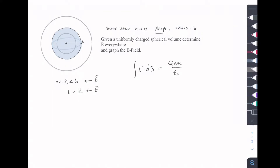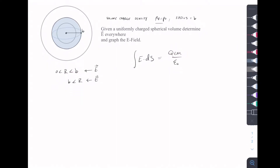When we're looking at the inside part from 0 to b, the charge enclosed is going to be less than the total charge, because the total charge is when our radius is at b — that's the full charged volume. When it's less than b, we're taking a smaller chunk. So we have to be aware that we're looking at a smaller chunk of enclosed charge.